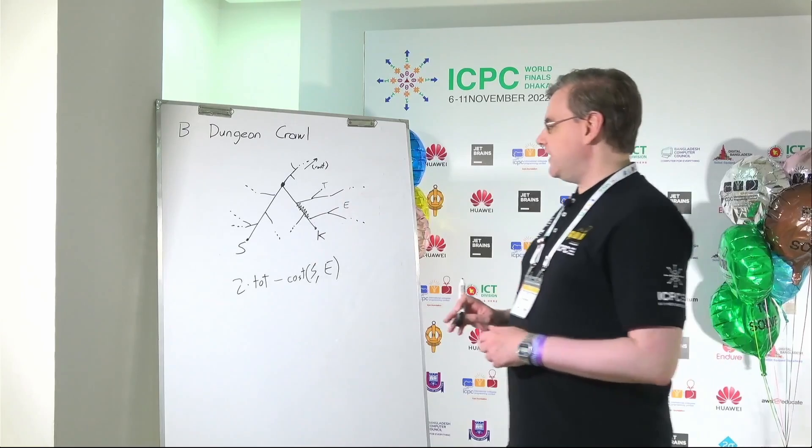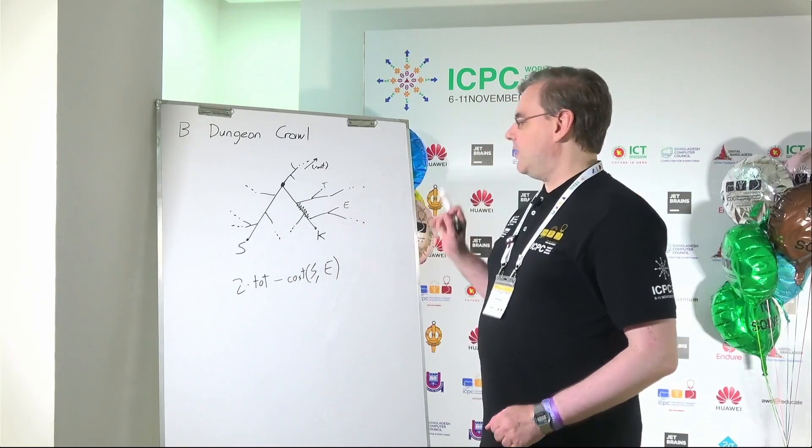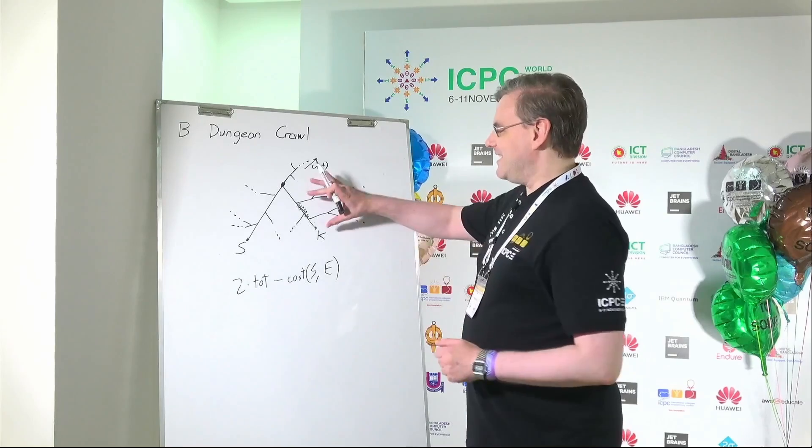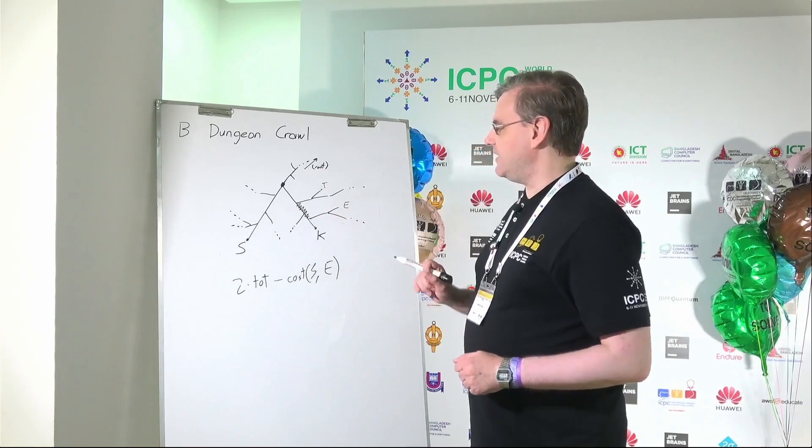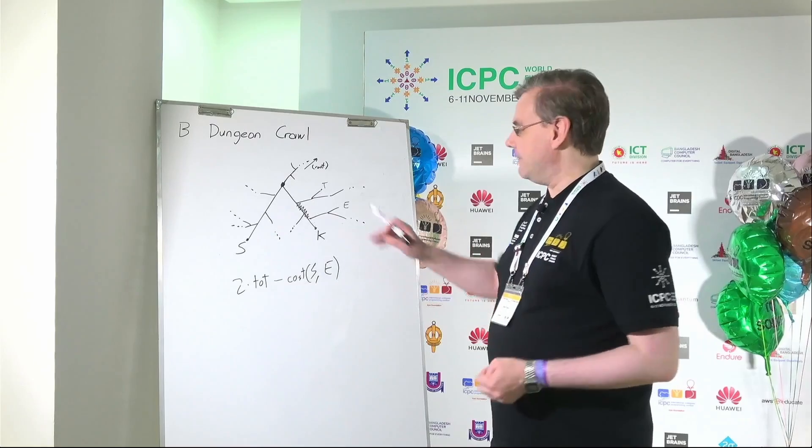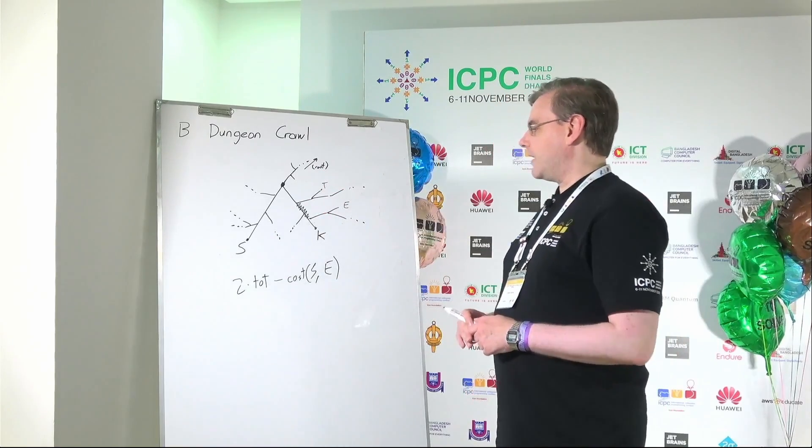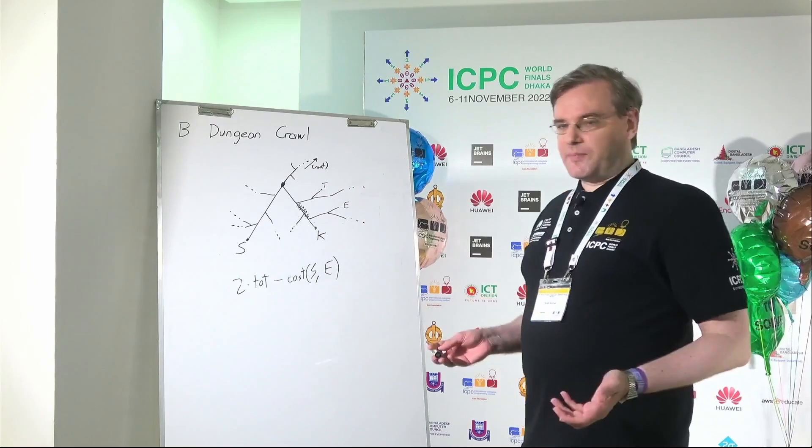And if you were thinking of it in terms of finding the longest path to a vertex E, you just have to think of it as negating the cost of all of these edges. In other words, instead of saving you time, they are actually costing you extra time to take these edges. So that is the trick. This analysis is the beginning of the problem.